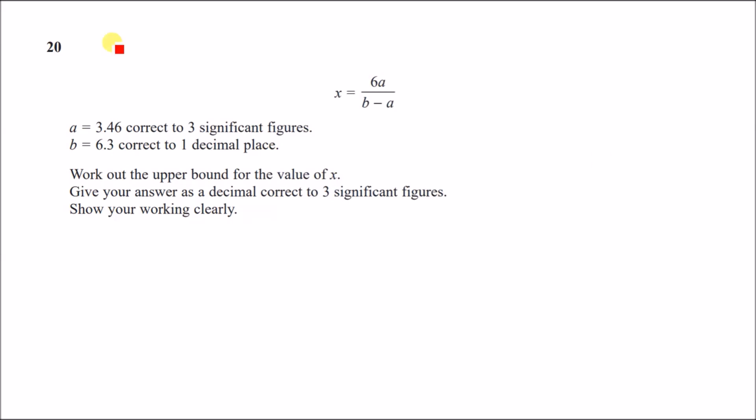Alright, number 20. So we've got an equation x equals 6a over b minus a, and it tells us that each of these values have been rounded to a certain number of significant places or decimal places. So when they say that, it means that it must have been something else before, something bigger than three sig figs or something bigger than one decimal place.